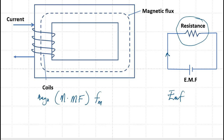We also want to compare resistance in an electric circuit with reluctance in the magnetic circuit. For resistance in the electric circuit, we normally denote it as R, but in the magnetic circuit, the reluctance is usually denoted as S. For current in electric circuits, we denote it as I, while for magnetic flux in magnetic circuits, we denote it as φ (phi). With this, we can begin to talk about magnetomotive force.